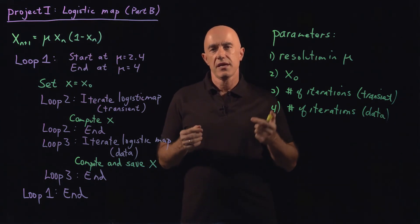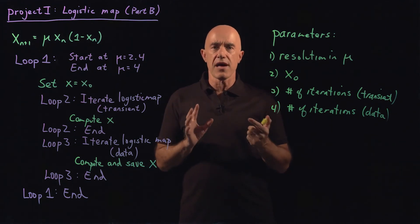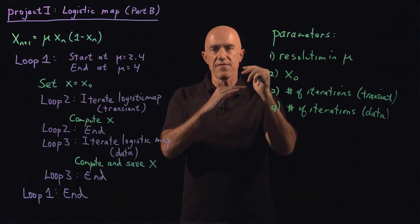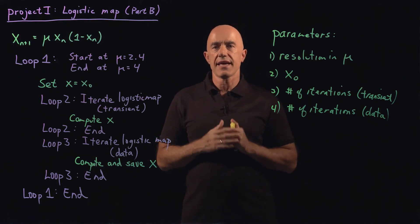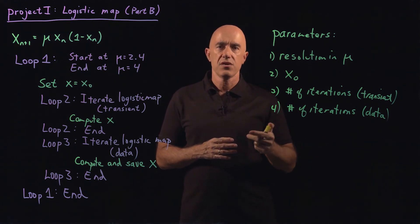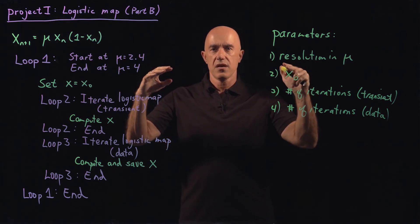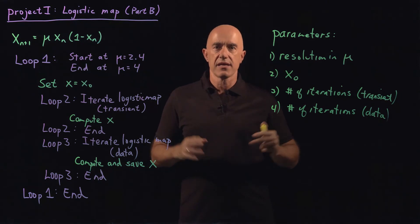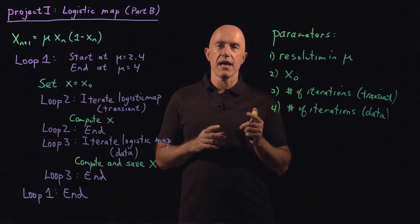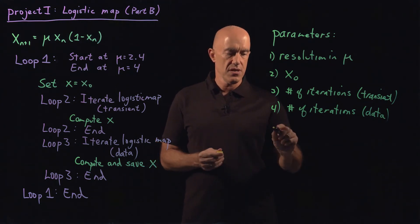What you'd really like is that when you have more and more data points, you get a better and more accurate-looking graph. To solve that problem, instead of plotting all the x's at each mu, you bin the values of x into certain regions and count how many x's are in each region. Regions with more data points you color darker; regions with fewer data points you color lighter. So you're taking your mu-x space and dividing it into little rectangles, calling each rectangle a pixel of your figure, and deciding what shade of gray to color the pixel.